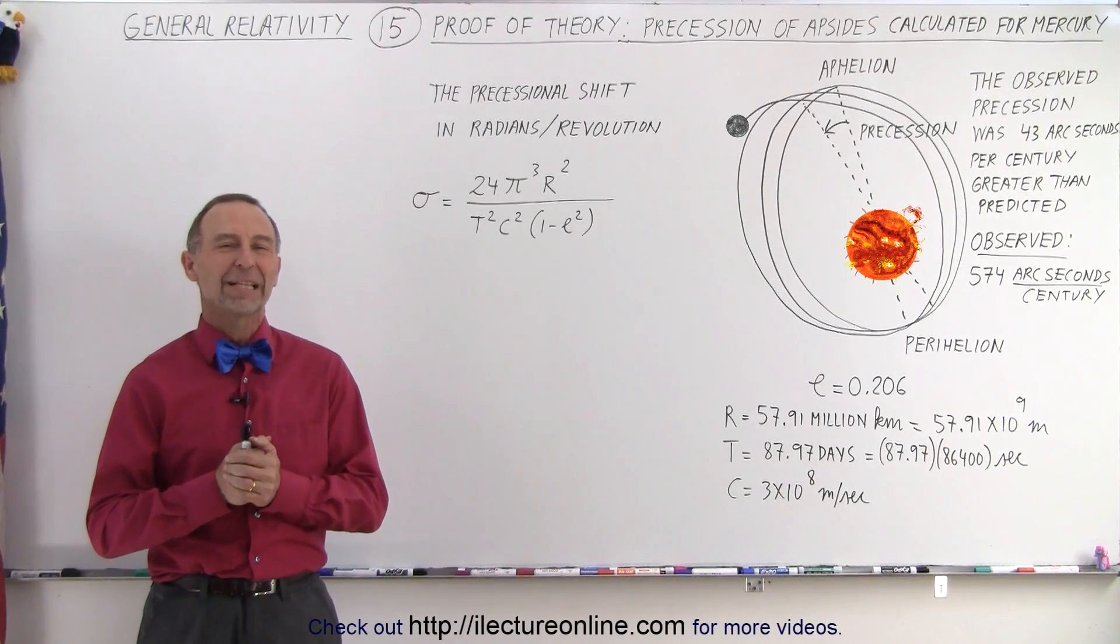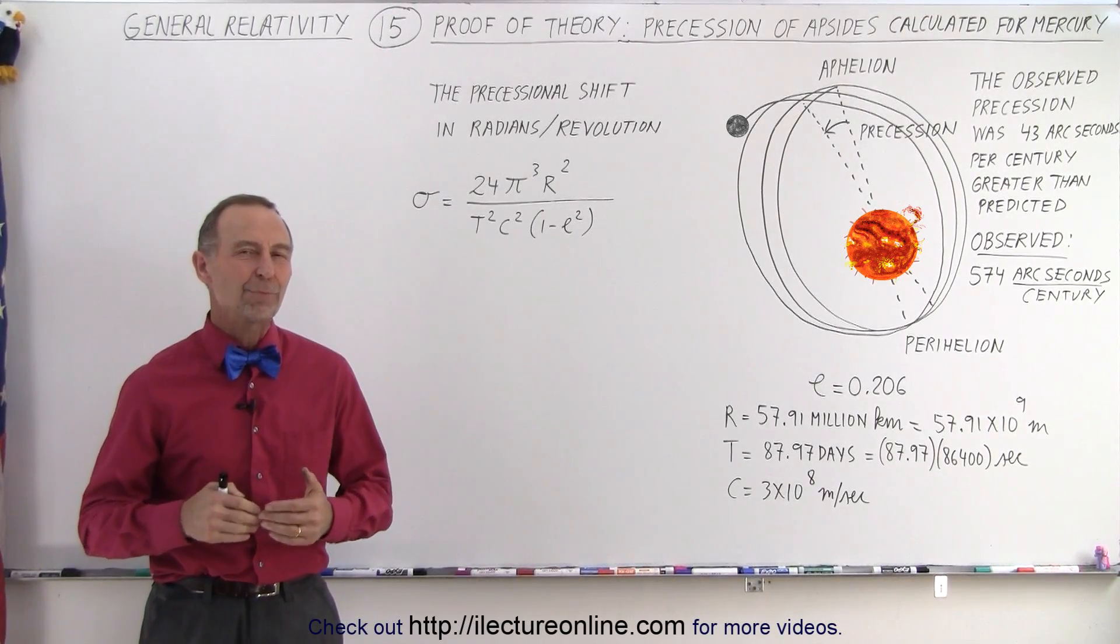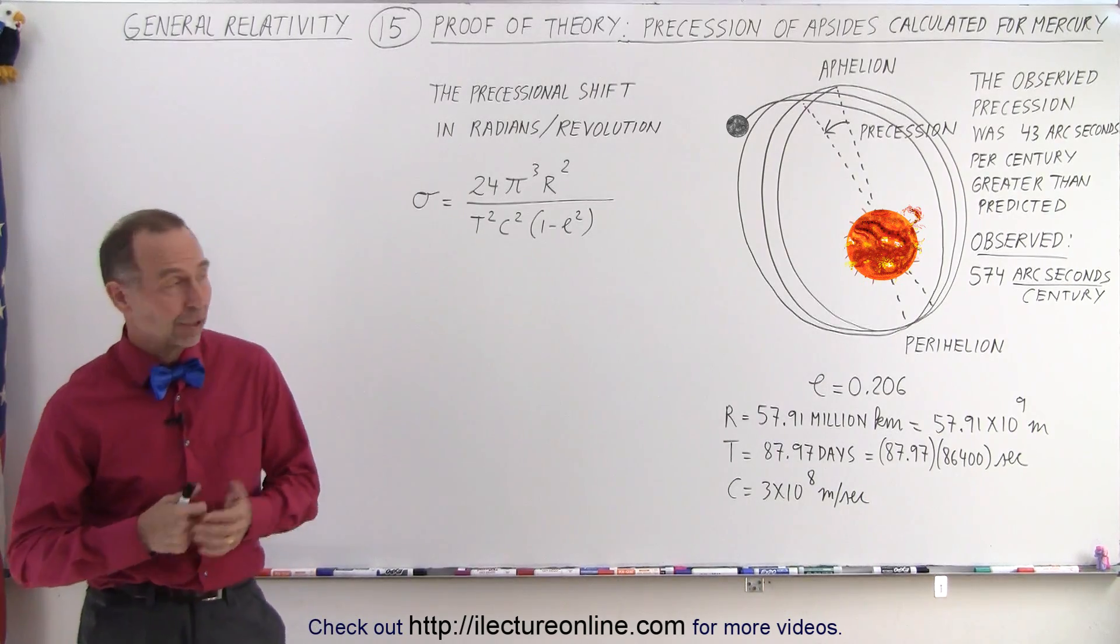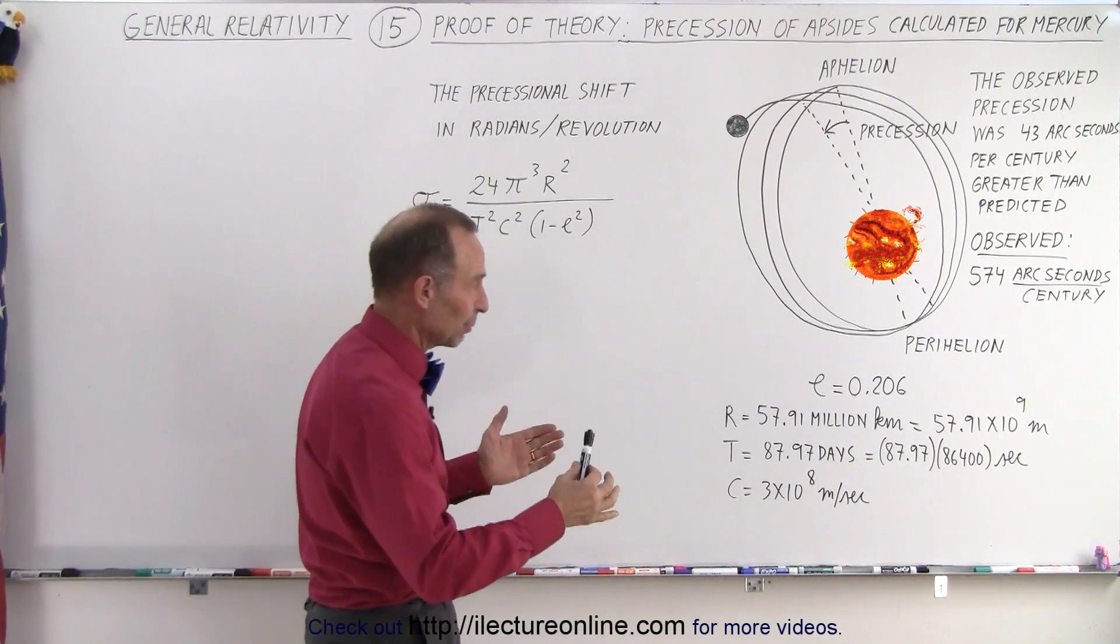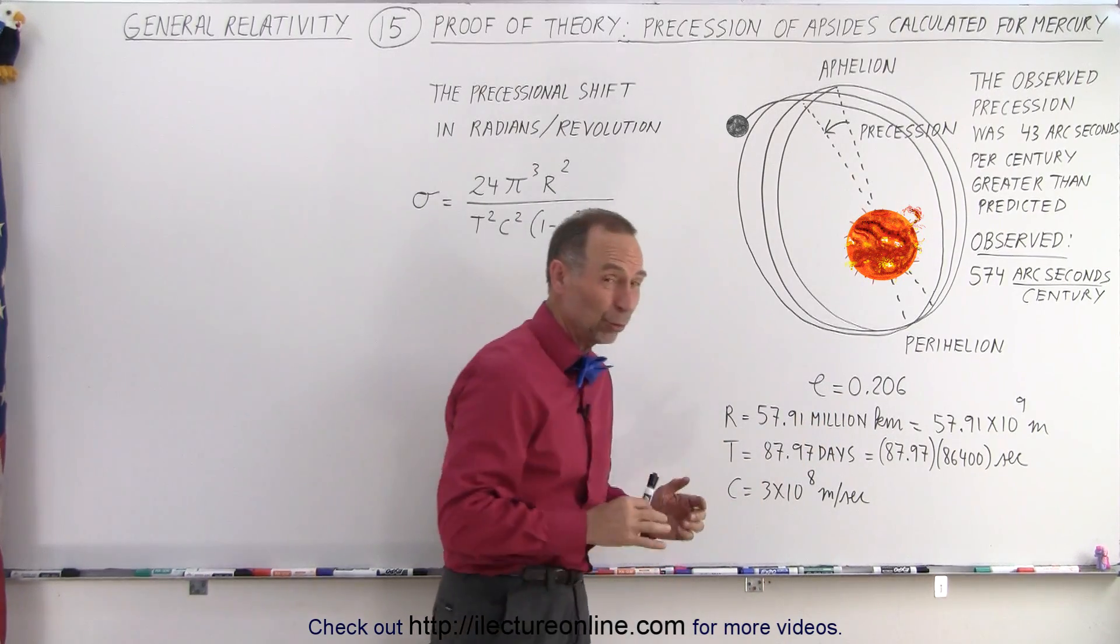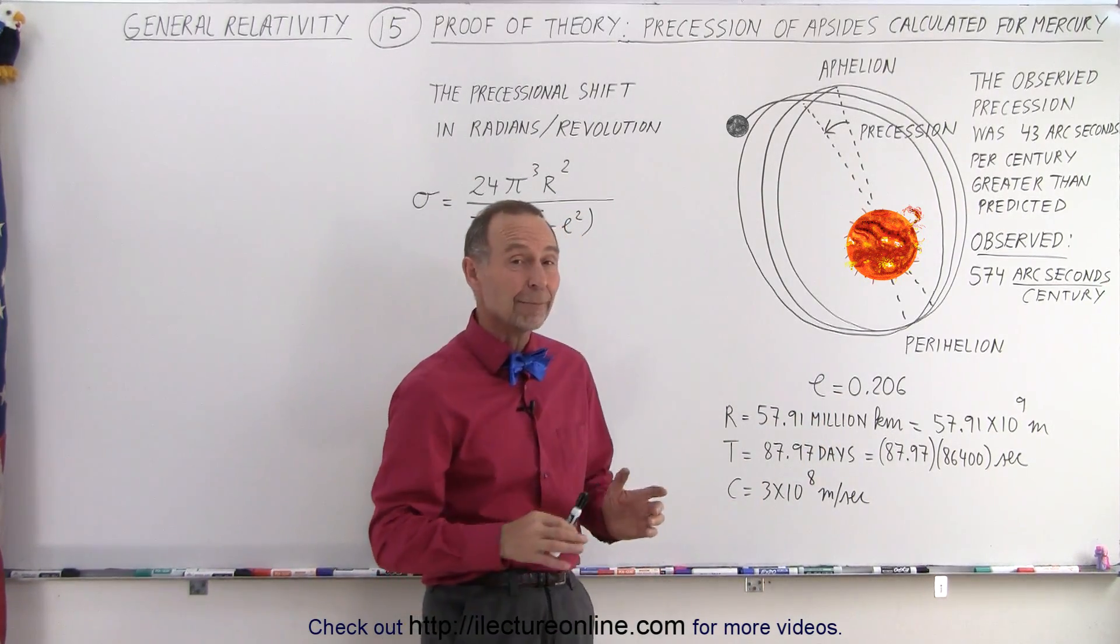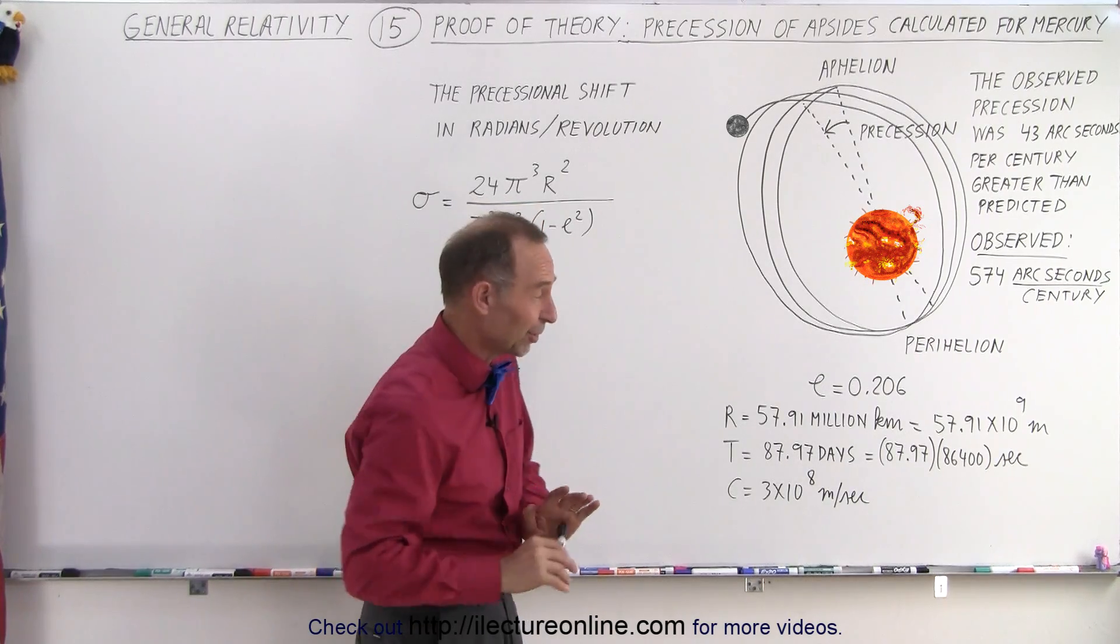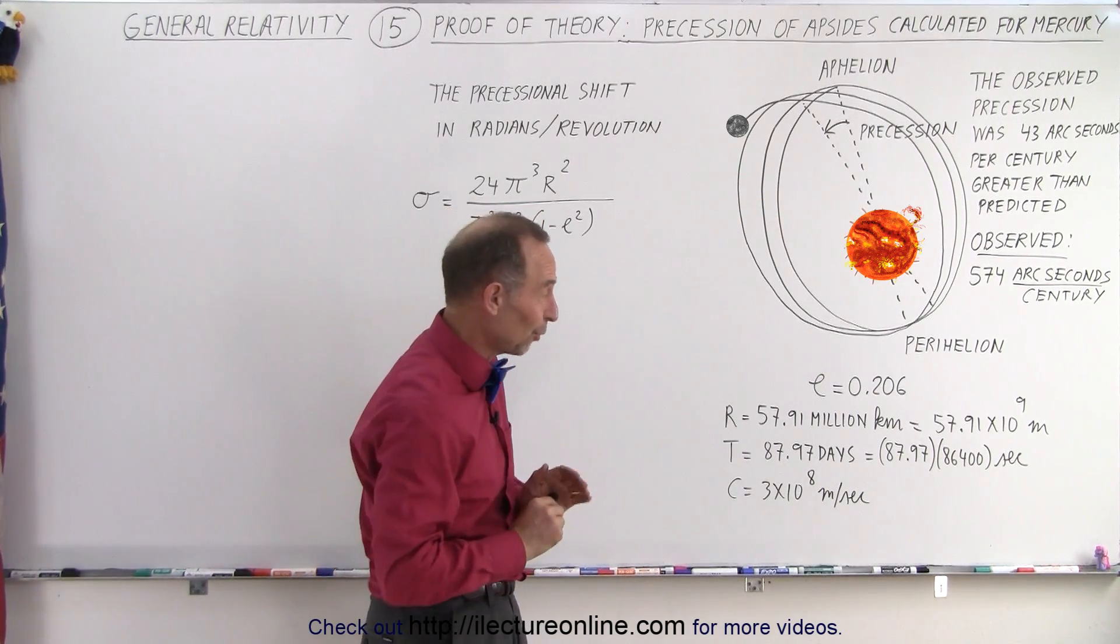Welcome to iLectureOnline. Let's take another look at the precession of Mercury. It turns out that if you take a look at Mercury, Mercury has a very eccentric orbit, eccentricity at 0.206, which is only exceeded by Pluto, which is technically no longer a planet, now considered a dwarf planet.